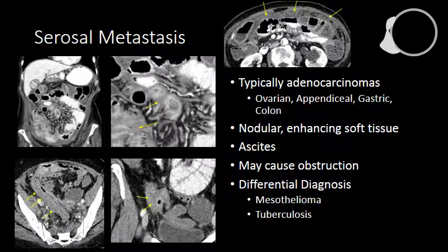When we think about serosal metastases, they are most commonly associated with adenocarcinomas spreading through the peritoneal cavity. You can sometimes have serosal or peritoneal carcinomatosis due to hematogenous spread, but this is less common than intraperitoneal spread. The most common adenocarcinomas associated with serosal metastases — often referred to as peritoneal carcinomatosis — are ovarian cancer, appendiceal cancer, gastric cancer, and colon cancer. Ovarian cancers of a serous variety and mucinous cancers from the GI tract tend to calcify. The serosal metastases often appear as nodular enhancing or irregular soft tissue, tend to be less circumferential than adenocarcinoma, and are associated with ascites. As serosal metastases progress and become very bulky, they may cause obstruction.